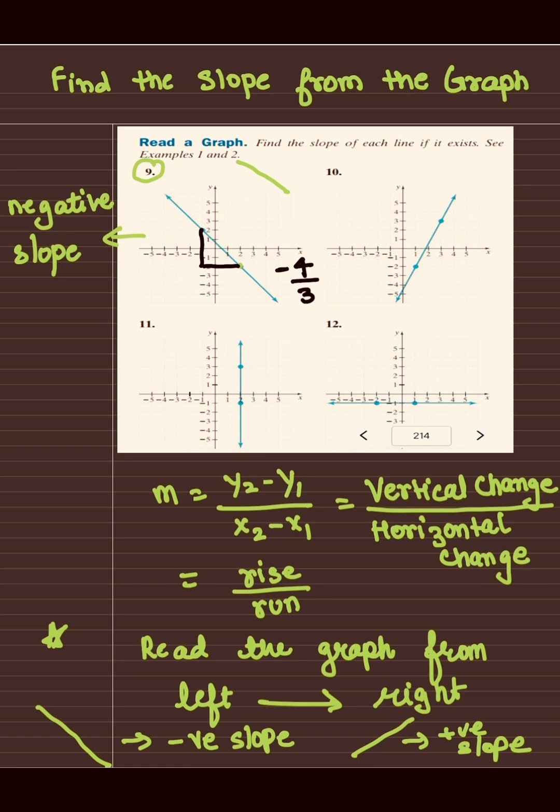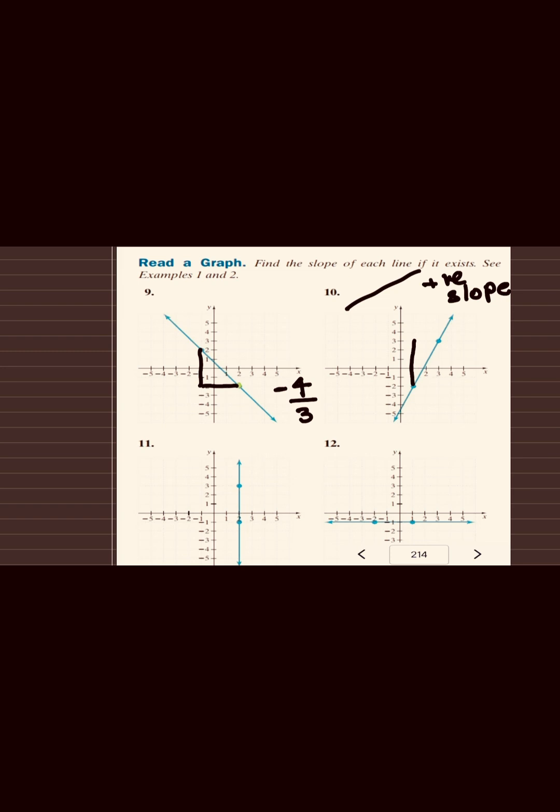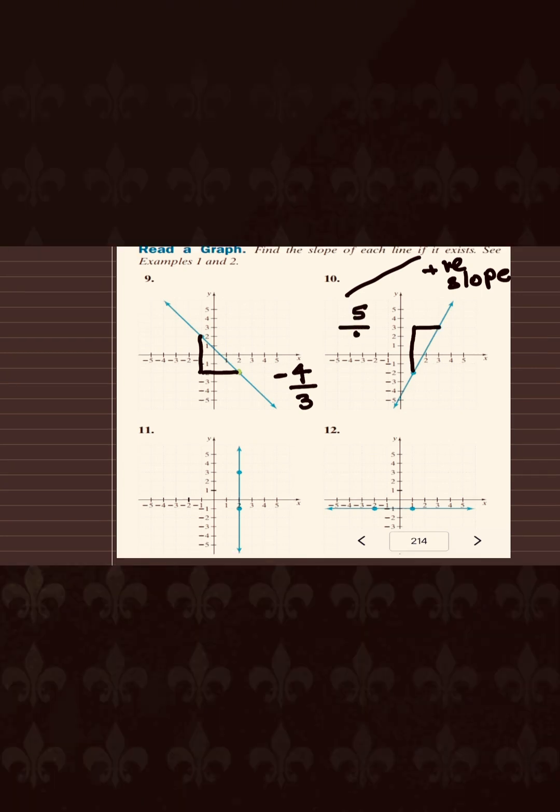Okay, let's see another question. For question number 10, when we read it from left to right we see that it's going up, which means it has a positive slope. And again we will count rise over run. So let's see how many units we need to go up in order to reach to that point. It is five units. And then we will go two units to the right. So our rise over run is five over two. Our slope is also five over two.